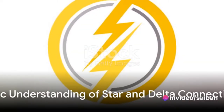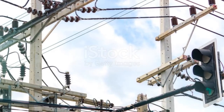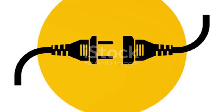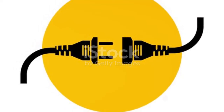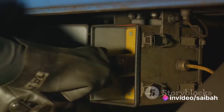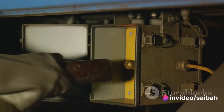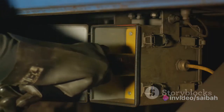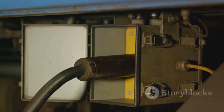First things first, it's important to get a basic understanding of what star and delta connections are. Let's start with the star connection, often symbolized by the letter Y. This is a three-phase connection where one end of each component is connected to a common central point. Picture a star with its points reaching out from the center — that's your visual cue for a star connection.